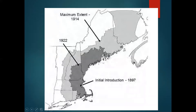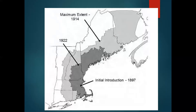This spot is Somerville, Massachusetts — the initial introduction point. The light gray area shows the maximum extent in 1914. You can see it covers Nova Scotia, New Brunswick, almost all of Maine, all of New Hampshire, half of Vermont, two-thirds of Massachusetts, half of Connecticut, all of Rhode Island, and even a little bit of Long Island in New York. There was a population collapse in the late teens and early twenties, illustrated by the darker area, which sort of collapsed inward and kept collapsing.